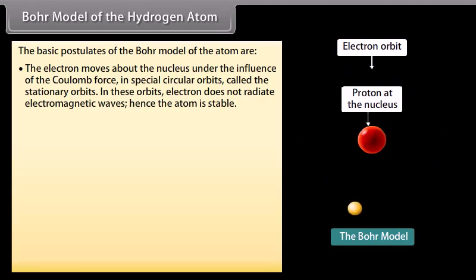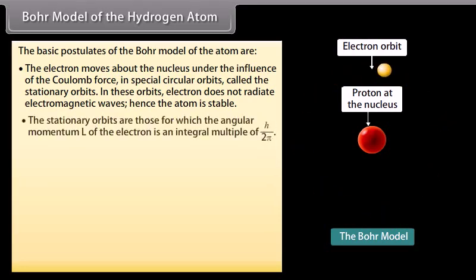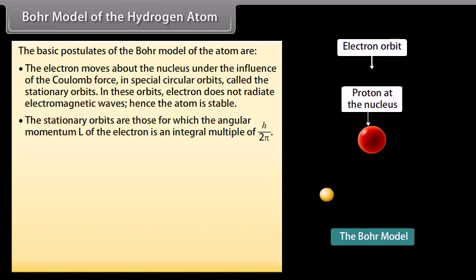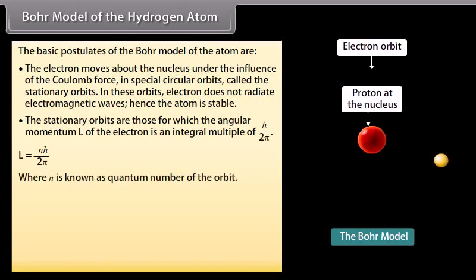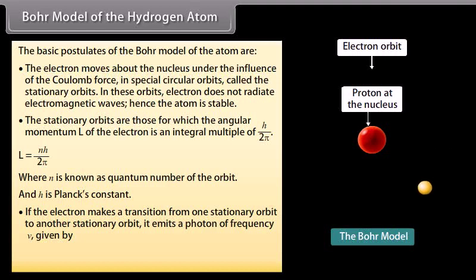Bohr's postulates. The electron does not radiate electromagnetic waves in these orbits, hence the atom is stable. The stationary orbits are those for which the angular momentum L of the electron is an integral multiple of h/2π. L = nh/2π, where n is known as quantum number of the orbit and h is Planck's constant. If the electron makes a transition from one stationary orbit to another stationary orbit, it emits a photon of frequency ν given by (E_i - E_f)/h.